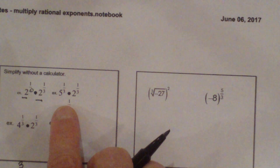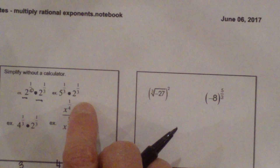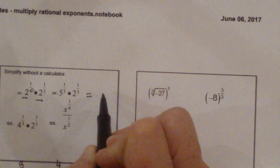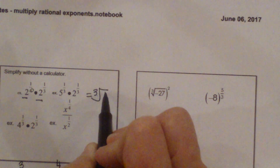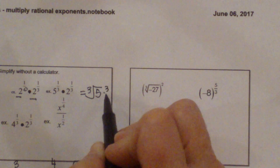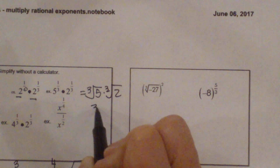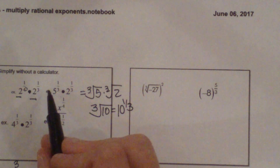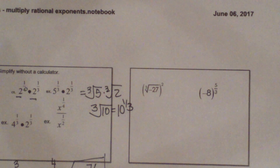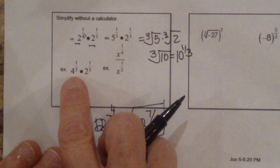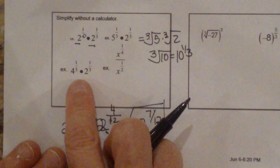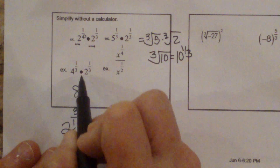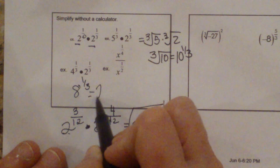Now let's look at the second one. We have 5 to the 1 3rd times 2 to the 1 3rd. When we have like exponents, we can write those as cube roots — the cube root of 5 times the cube root of 2. Since they're under the same root, we can combine those to be the cube root of 10, which is 10 to the 1 3rd. And this one you can also do two different ways: because they have the same exponent, we can multiply those together and get 8 to the 1 3rd, which simplifies to just 2, because that's asking us to find the cube root of 8.